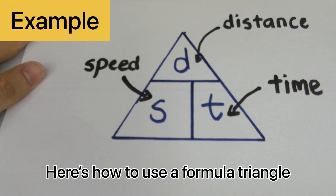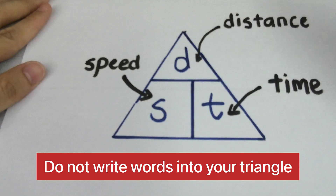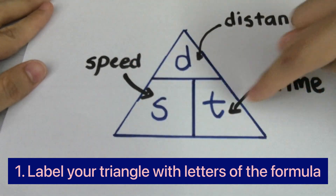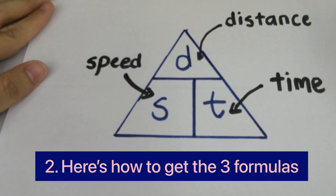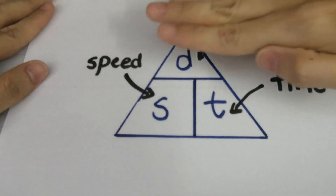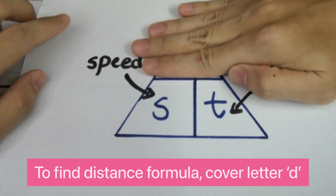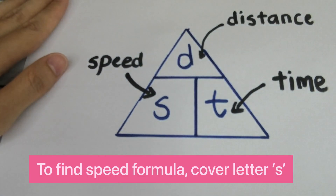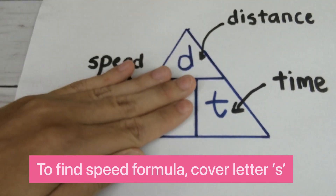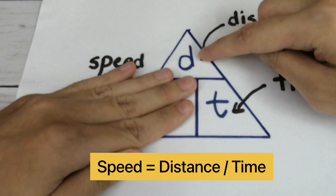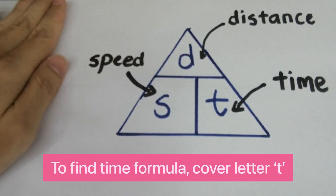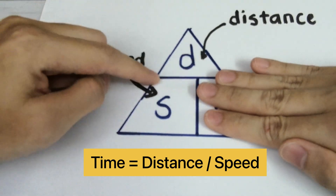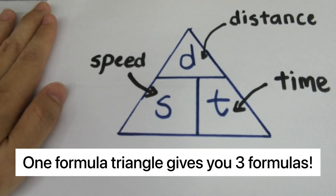Here's how to use a formula triangle. Use the letters of the words — distance is d, speed is s, and time is t. To get the formula for distance, use your palm to cover the letter d, and you can see that distance equals speed times time — side by side means multiply. To get speed, cover s: speed equals distance divided by time. To get time, cover t: time equals distance divided by speed. You get three formulas from one single triangle.